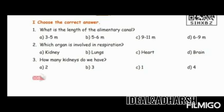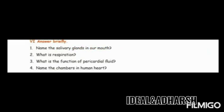Now for question and answer. Choose the correct answer: What is the length of the alimentary canal? The options are 3.5, 5 to 6, 9 to 11, or 6 to 9. The answer is 6 to 9 meters.